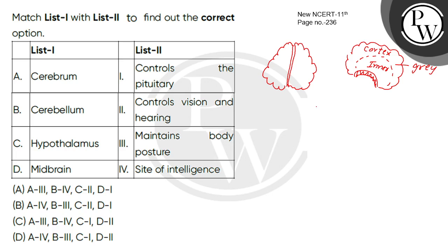The Cerebral Cortex plays a key role in memory, thinking, learning, reasoning, and problem solving. So the Cerebrum is the site of intelligence.